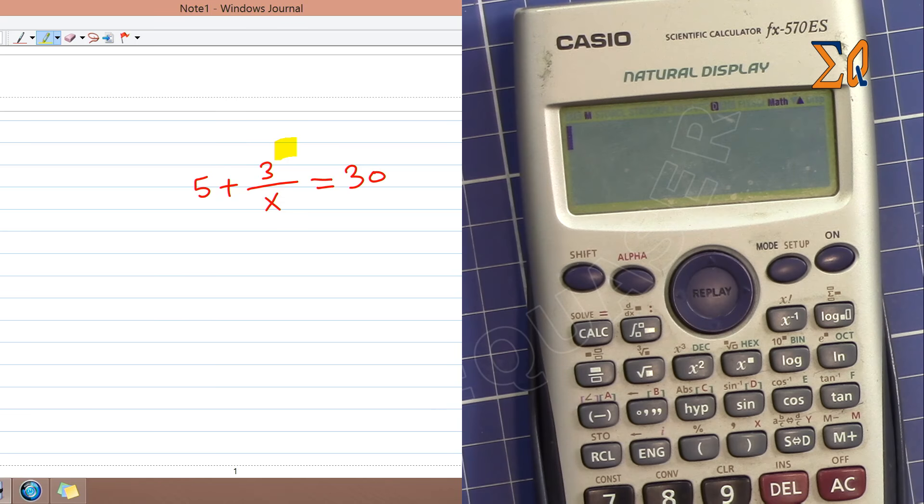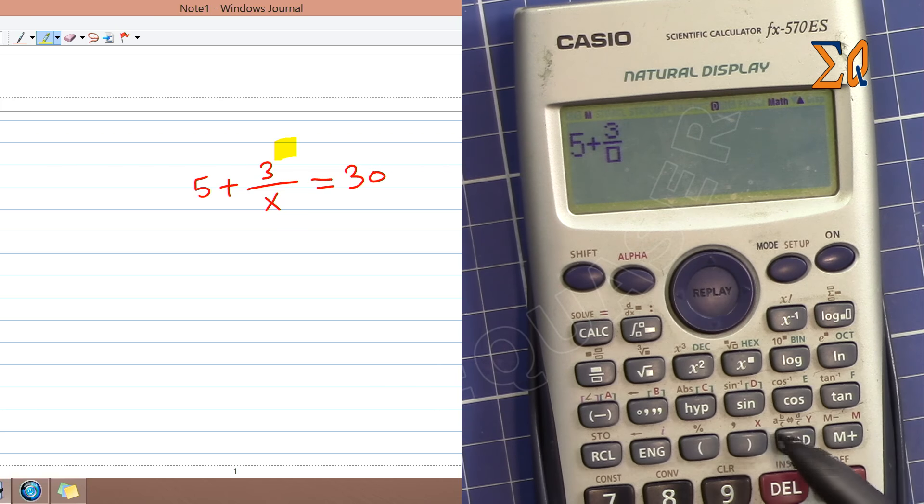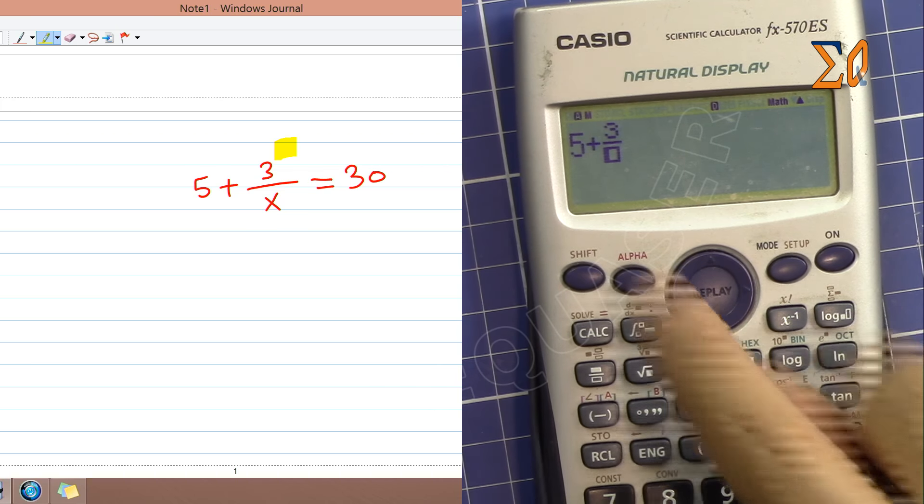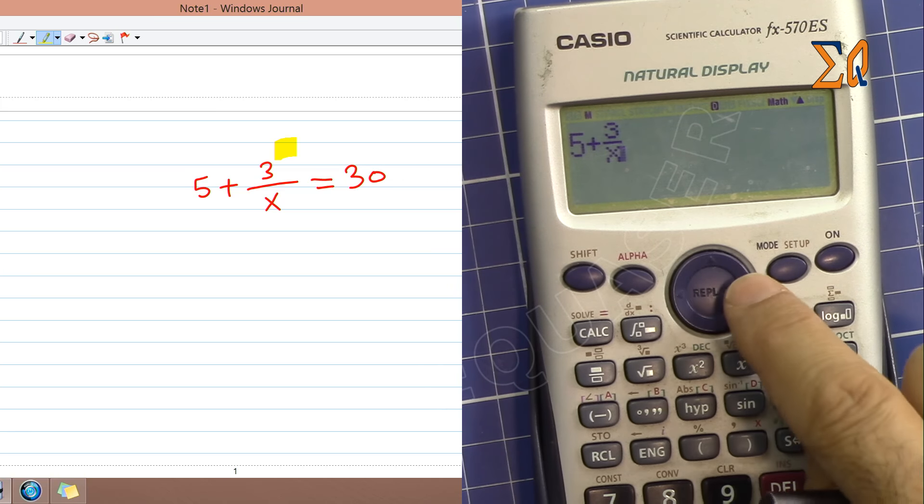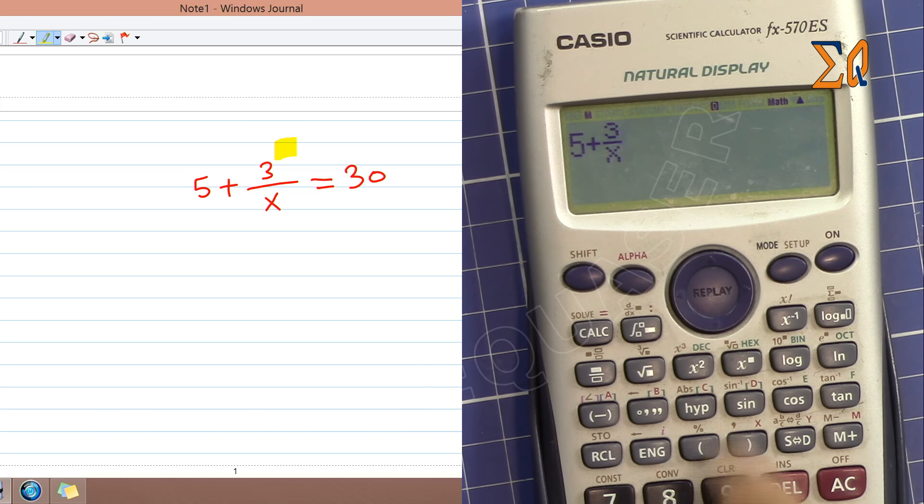Here's how we do it: 5 plus - I'm pressing this - 3, with the arrow come down, and here to enter x we press alpha and then x. So now x is here. With the arrow go to the right.